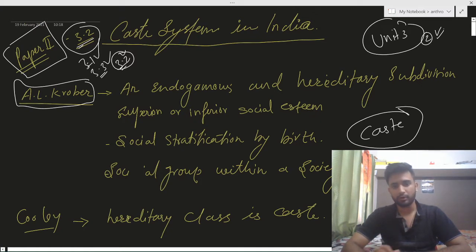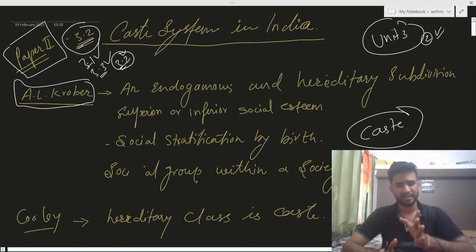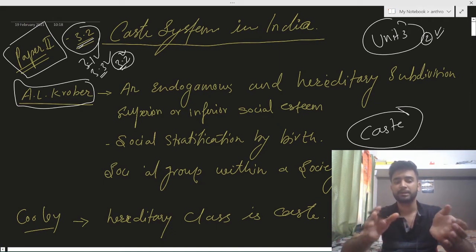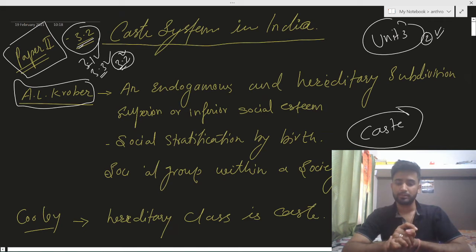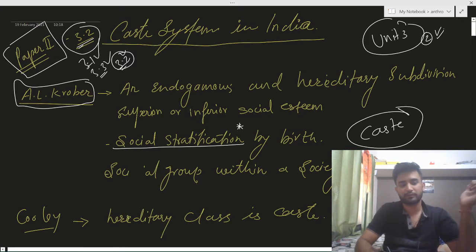The first definition we are going to discuss is by A.L. Kroeber. According to Kroeber, caste is an indigenous and hereditary subdivision where superior and inferior positions in the social system are associated. This is connected to social stratification.